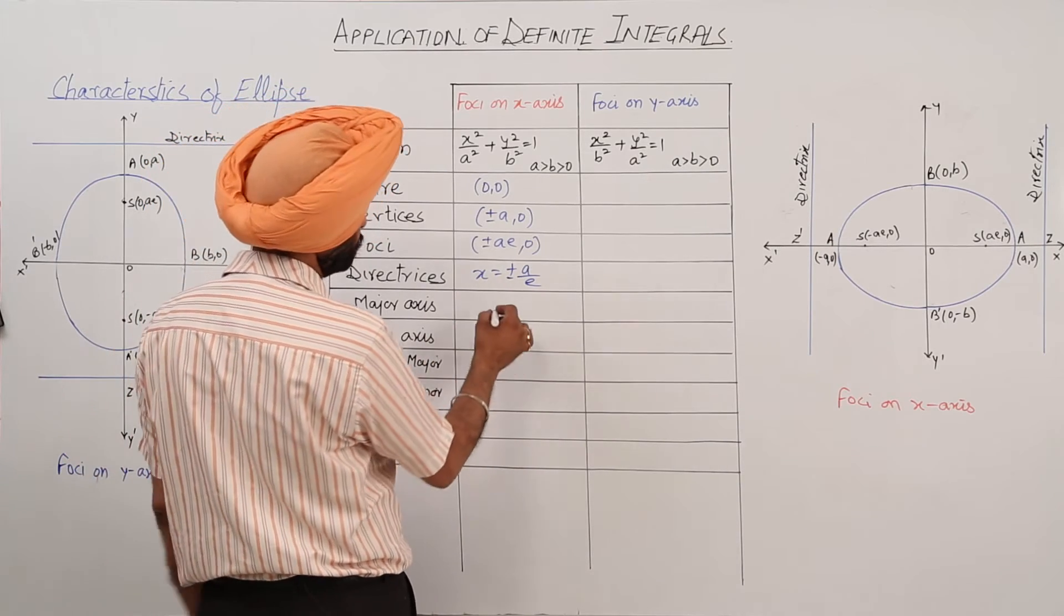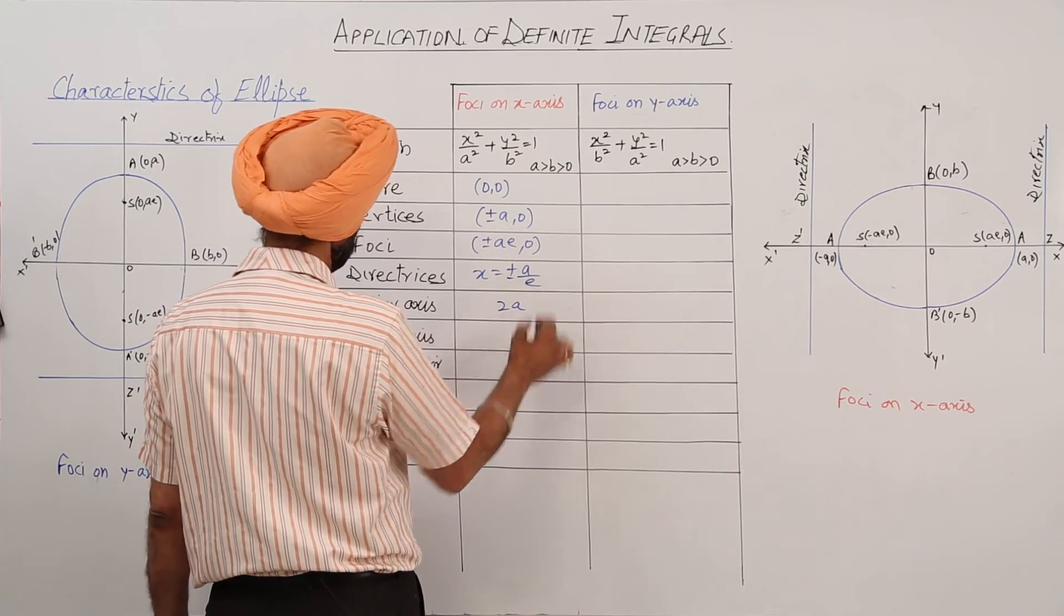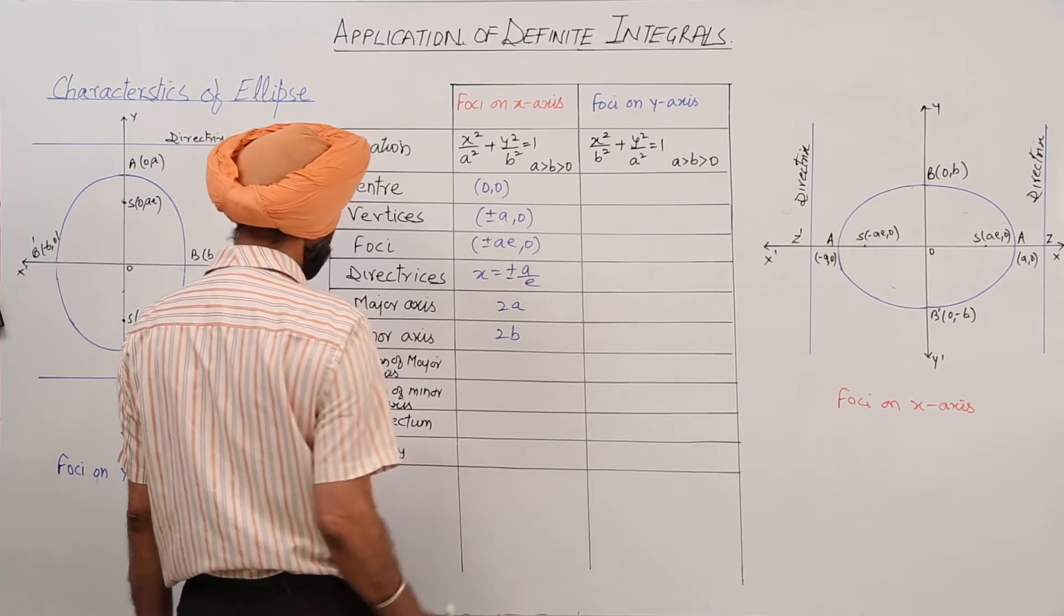Then, we are having major axis: 2a. Minor axis: 2b.